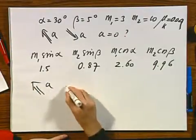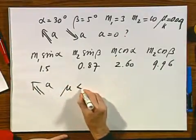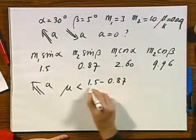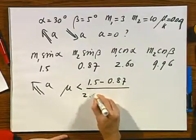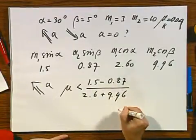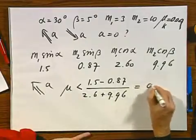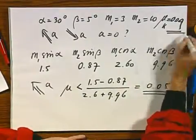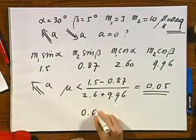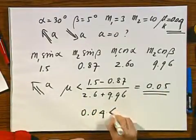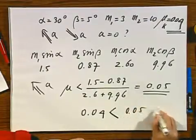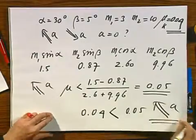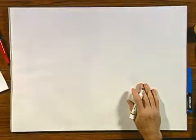Let's first evaluate the situation, whether perhaps A is in this direction. In other words, is mu smaller than 1.5 minus 0.7 divided by 2.6 plus 9.96? And the answer is yes, because this answer is 0.05. And the actual friction coefficient is 0.04. And since 0.04 is indeed smaller than 0.05, the acceleration is non-negotiable, will be in this direction.